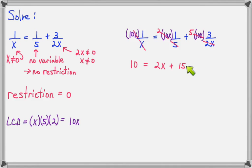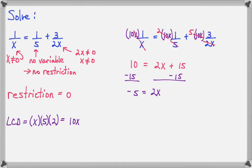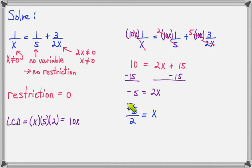Now we have 10 = 2x + 15. Subtract 15 from both sides: negative 5 = 2x. Divide both sides by 2 and x = -5/2. We just want to make sure our solution is not a restriction — and of course it's not — so this is a valid solution. You could plug it back in with a calculator to verify both sides equal the same number.